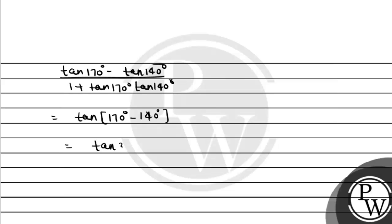tan 170° minus 140° will be 30°, and we know that tan 30° value, that will be 1 upon √3.